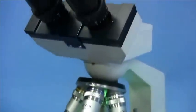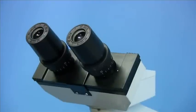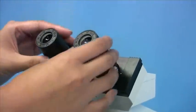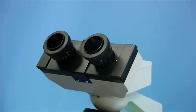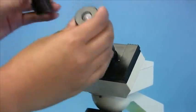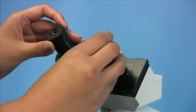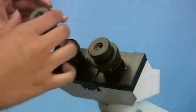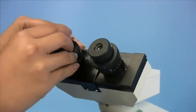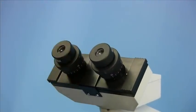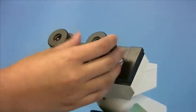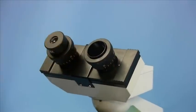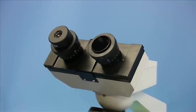Now if you want to use the other pair of eyepieces, simply remove the 10x eyepieces and place the 20x into the eyepiece tube. If you want to use a camera, then simply remove one of the eyepiece and place the camera into the eyepiece tube.